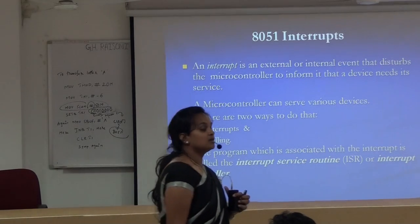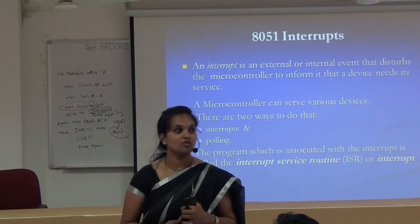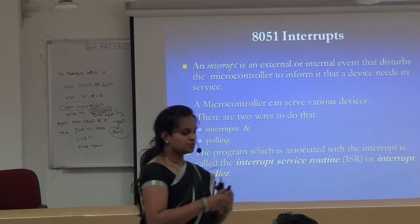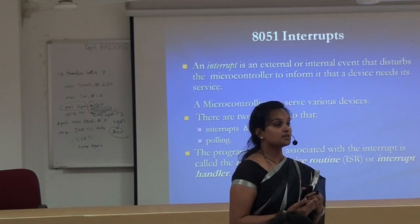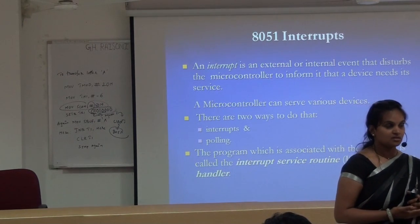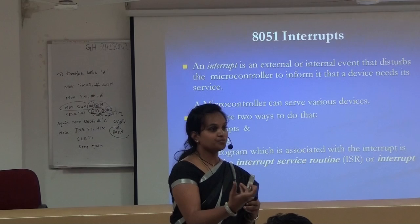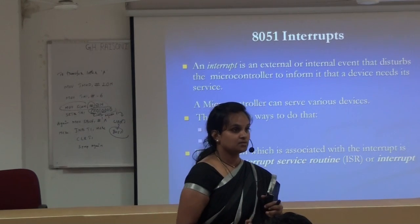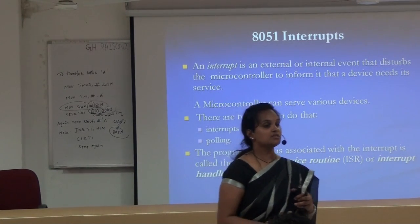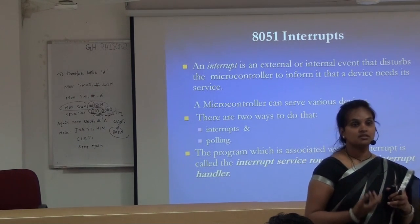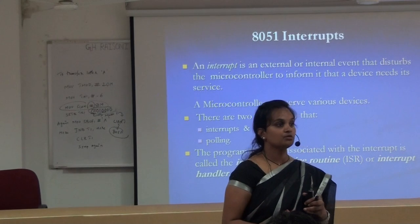Now we know what communication is, what are the types — serial and parallel, and types of serial communication — simplex, half duplex, full duplex. We know the pins associated with serial communication — TXD and RXD in port 3, pin 0 and pin 1. We know how to interface using MAX232 and RS232, also called DB9 connector, and that complete serial communication is controlled by the SCON register which is 8-bit.